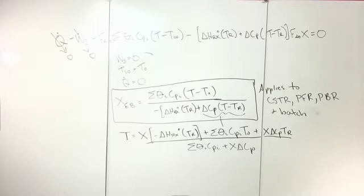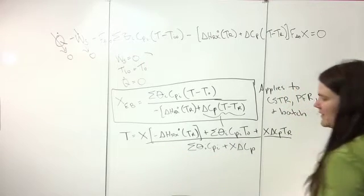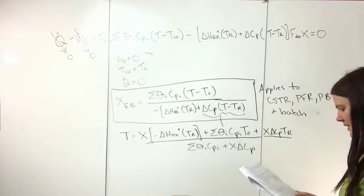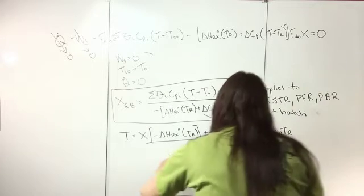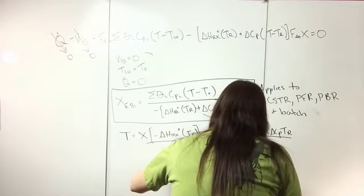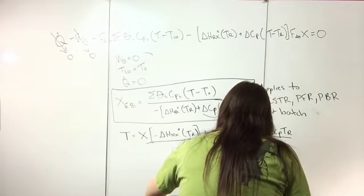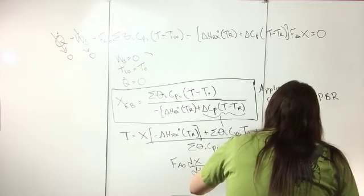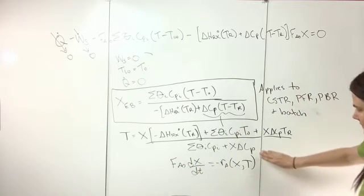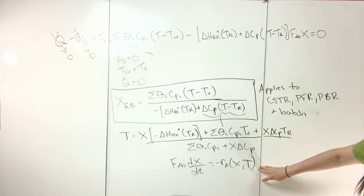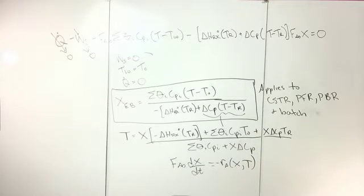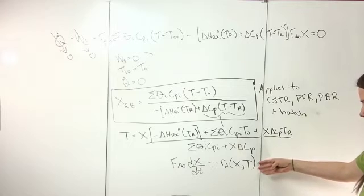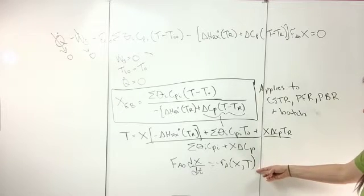This is the equation you couple with the differential mole balance when solving these problems. For a PFR, F_A0 dX/dV equals minus r_A(X, T). When you solve your differential mole balance — or algebraic balance in the case of a CSTR — your rate of reaction will now be a function of T as well.